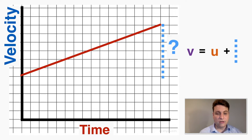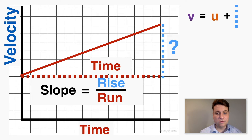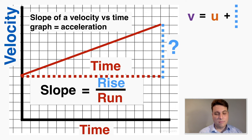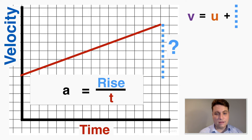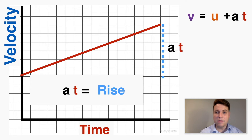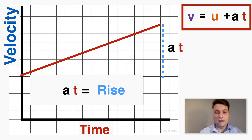The slope of the velocity-time graph is equal to rise over run. The run of this graph is the total time the object has been moving, since time is the x-axis. The slope of a velocity graph is equal to acceleration. So slope equals a and run equals t. Multiplying both sides by t, we find that a times t equals that rise — the blue line. Replacing it, v equals u plus at, which is the first kinematics equation proved.